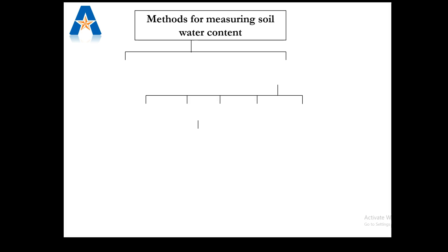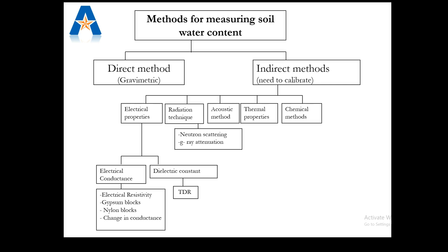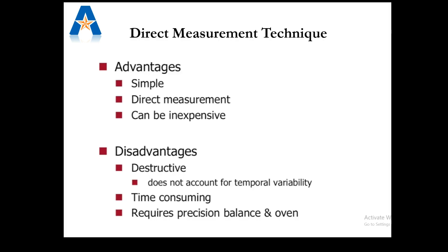The methods for measuring moisture content can be divided into two parts: direct method and indirect method. There are some indirect indicators of soil properties such as electrical resistivity or thermal properties which can be correlated with moisture content through empirical formulas. The direct method is comparatively simple, easy, and straightforward. However, the direct method has some disadvantages such as it is destructive, time-consuming, and requires precision balance and oven. Despite these disadvantages, the direct method is one of the most popular methods.